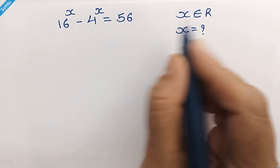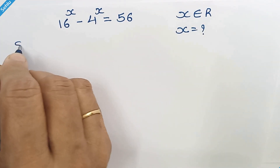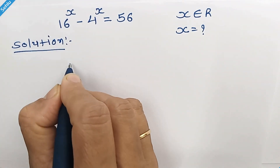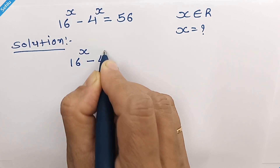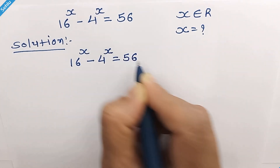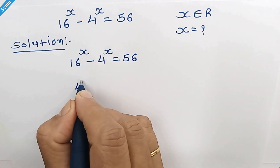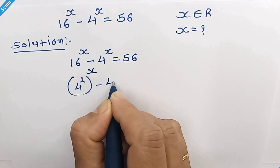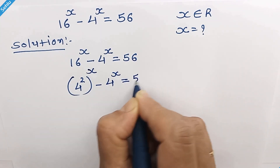Hello friends, let's solve for the real value of x. Our question is 16 raised to x minus 4 raised to x is equal to 56. Since 16 is 4 squared, we can write 4 squared whole raised to x minus 4 raised to x is equal to 56.